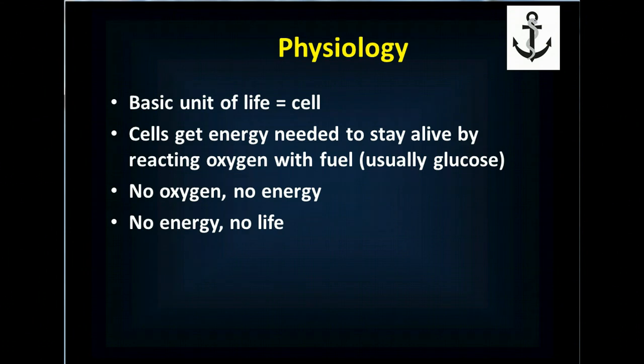In your body, your basic unit of life is your cell — the smallest individual living entity. They need energy to stay alive, and they generate this energy by chemically burning glucose with oxygen. When you combine the two, they make carbon dioxide, just as if you were to burn a piece of wood. The energy generated is stored in something called ATP.